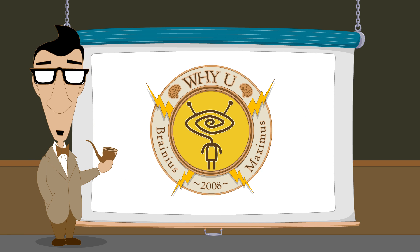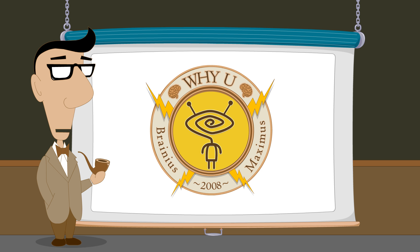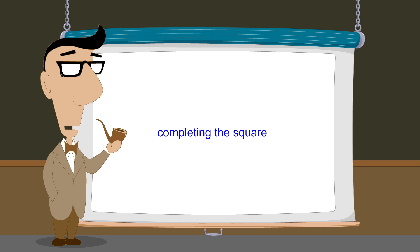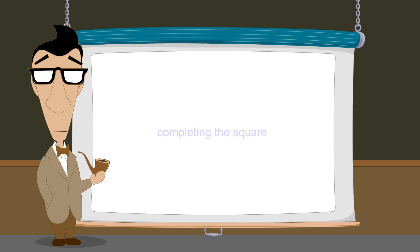Hello! I'm Professor Von Schmohawk and welcome to Why U. In the previous lecture, we introduced a general method of solving quadratic equations called completing the square. Before the method of completing the square was developed, only very limited types of quadratic equations could be solved. This method eliminated those limitations, allowing the solutions of any quadratic equation to be found. As mathematics progressed, this methodology was eventually reduced to a formula.